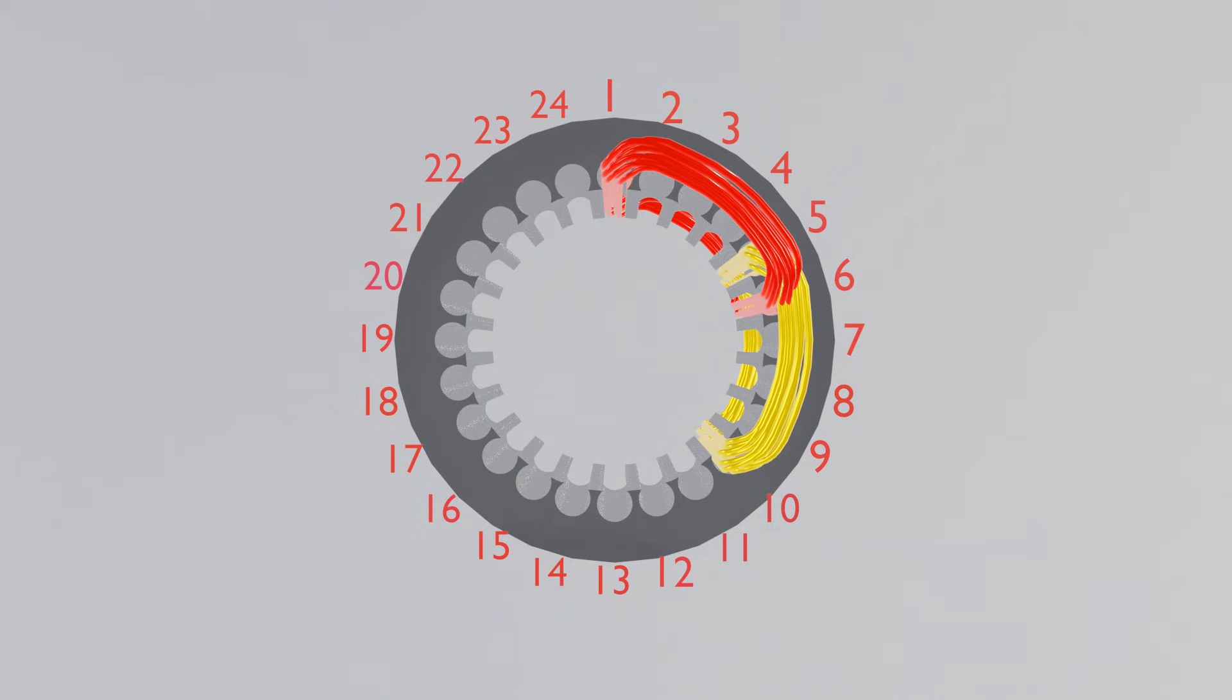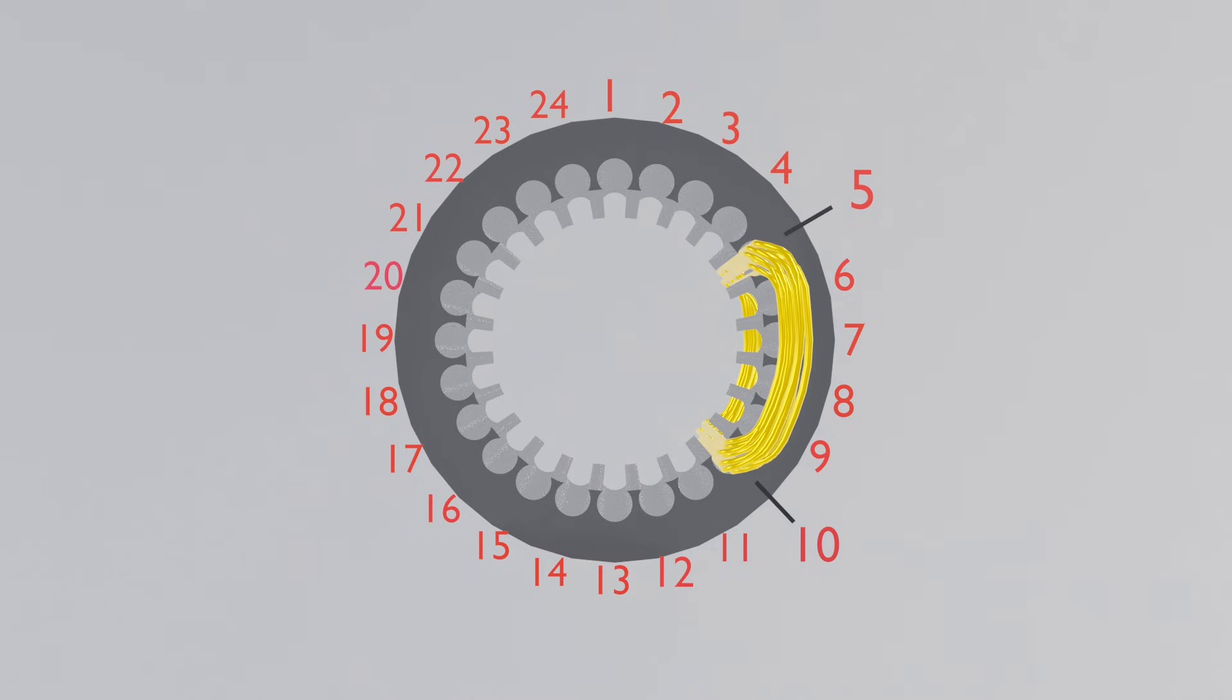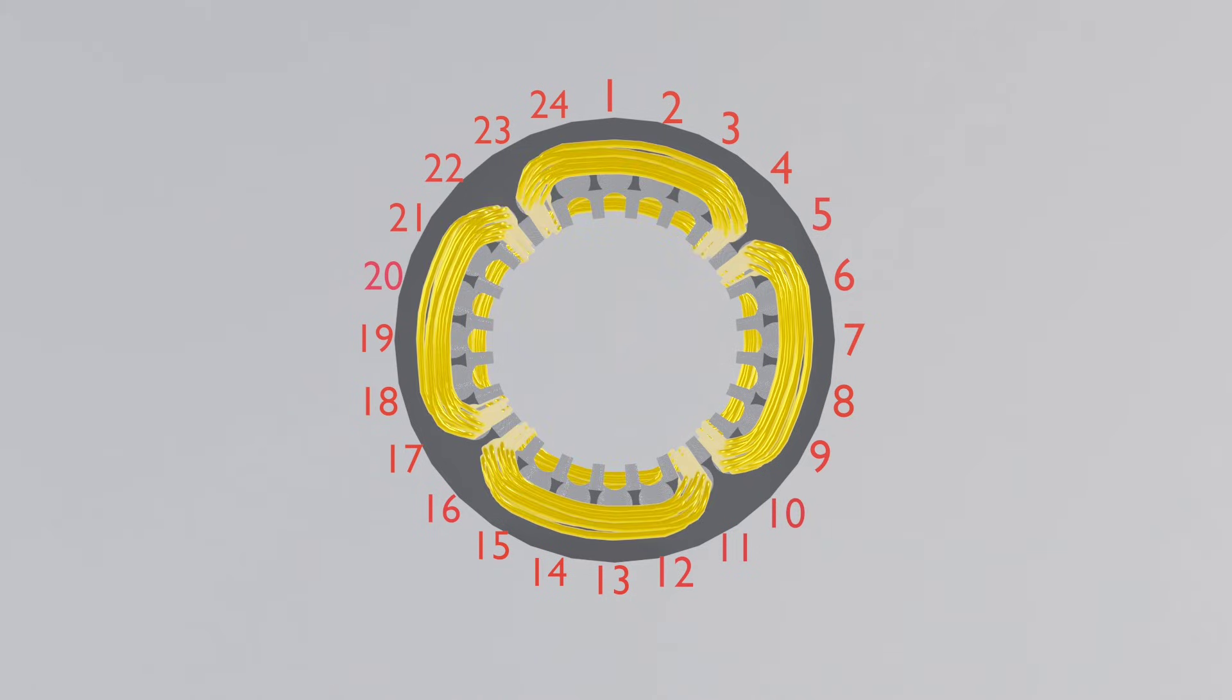The first coil of Y phase starts from slot 5, because the phase angle is 4. The second side of the coil is in slot 10, according to coil pitch. The remaining three coils are arranged for Y phase.